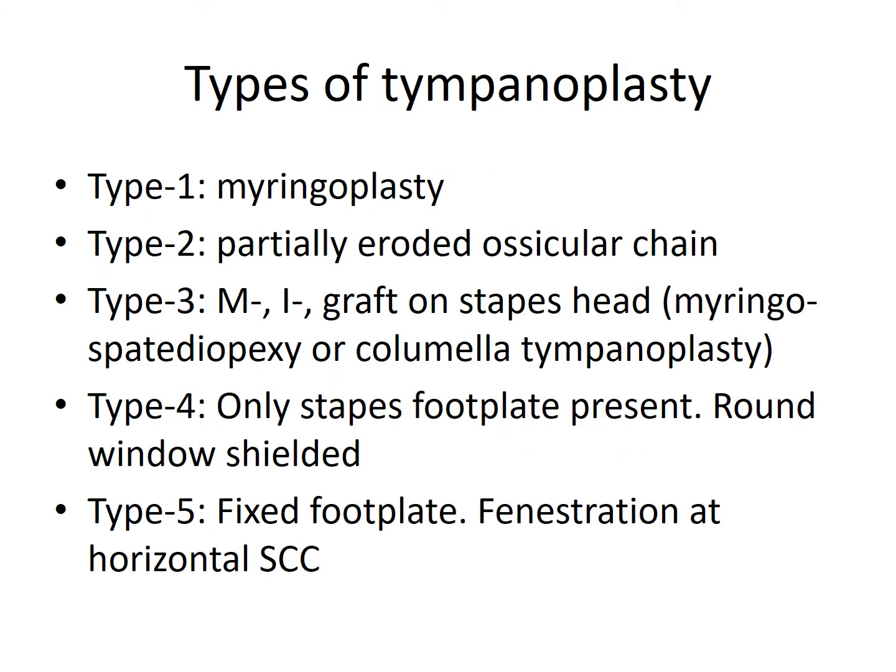Wullstein proposed a classification dividing Tympanoplasty into five types. Type 1 Tympanoplasty is similar to Myringoplasty — only the graft material is used to repair the Tympanic Membrane; the ossicular chain and middle ear are normal. In Type 2, there is a partially eroded ossicular chain but it is functional, so the graft is placed over the partially eroded ossicular chain. In Type 3, the Malleus is absent or eroded and the Incus is absent, so the graft is placed over the Stapes head — it is also called Columellar Tympanoplasty or Myringostapediopexy.